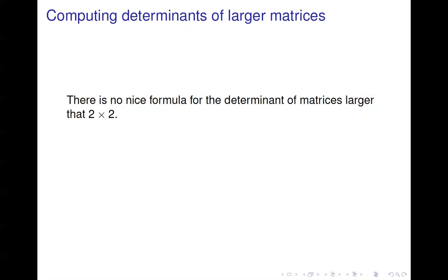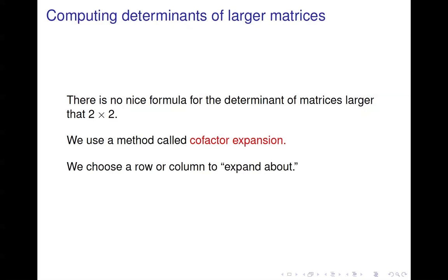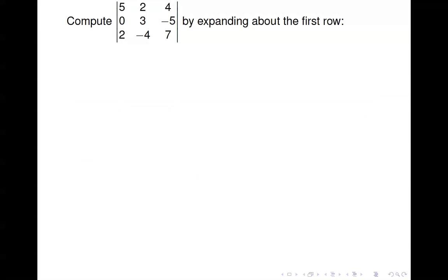Beyond the 2x2 case, there's no nice formula for computing the determinant, so we use a method called cofactor expansion, which works for any size matrix — 3x3 and up. In this method, we choose a row or column to expand about. It's advantageous to choose a row or column with the most zeros, because that eliminates some terms.